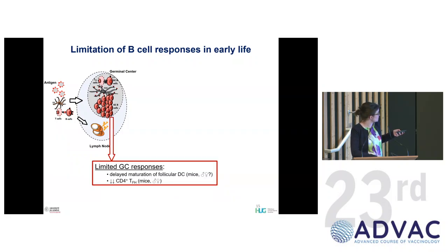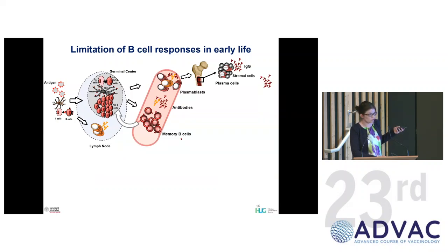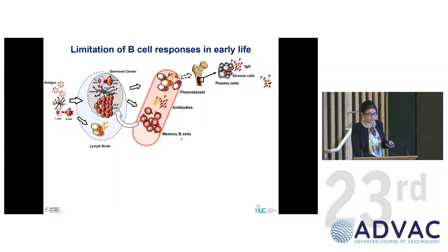Looking inside the germinal center, mouse studies show that maturation of follicular antigen-presenting cells is delayed — at the very beginning there are none or very few, and they only appear over time. There are also fewer T follicular helper cells. This means the germinal center response is limited. What comes out of the germinal center — as you may remember — is either plasma blasts in the blood, which become plasma cells in the bone marrow, or memory B cells. Memory B cells do not produce antibodies right away; they need to be reactivated to become antibody-producing cells.